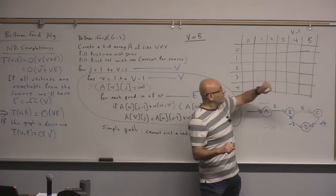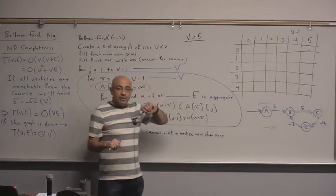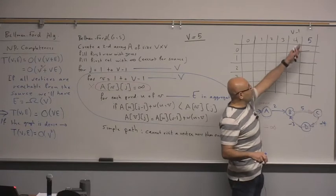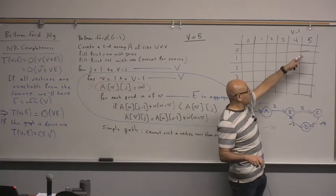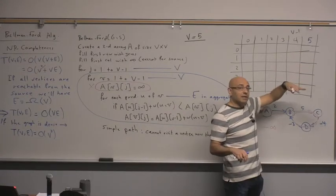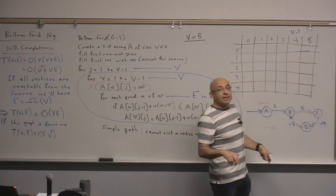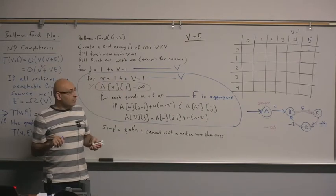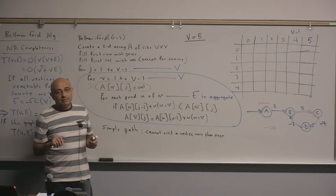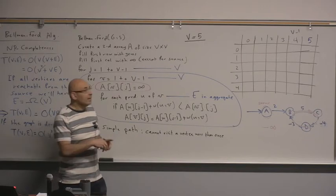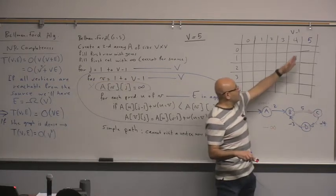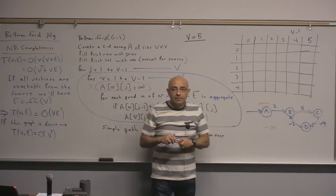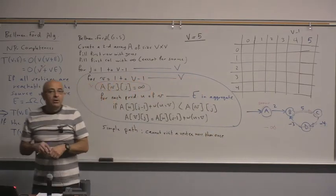How does this relate to Bellman-Ford? If the Bellman-Ford algorithm makes an improvement in the extra iteration — using V rather than V minus one — then Bellman-Ford detects a negative weight cycle, because there is no way to get an improvement in iteration V unless you have a negative weight cycle.